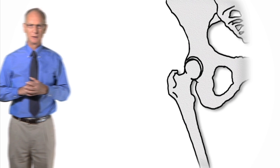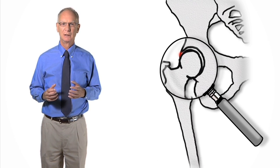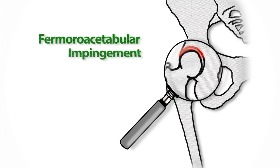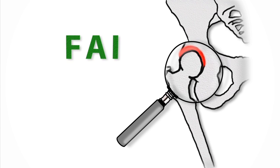The hip joint is a ball and socket joint which is very stable and mobile at the same time. Recently, researchers have discovered a deformity of the hip that causes unnatural friction, leading to a condition with an impossible name — femoroacetabular impingement. That's why we call it FAI.